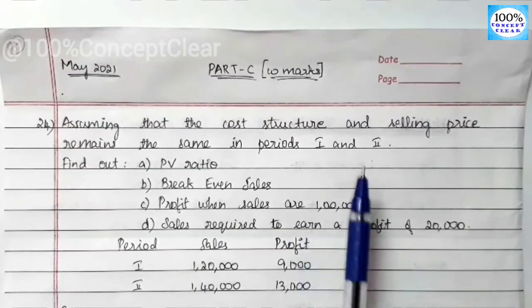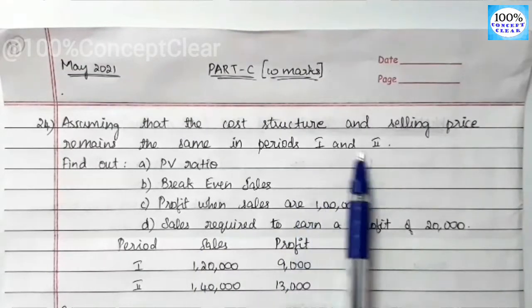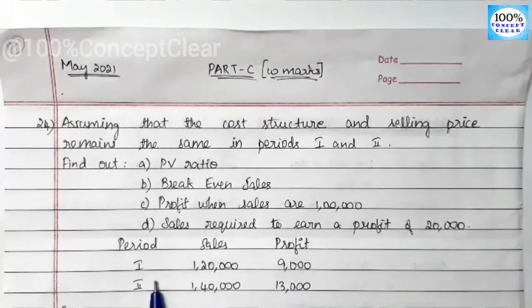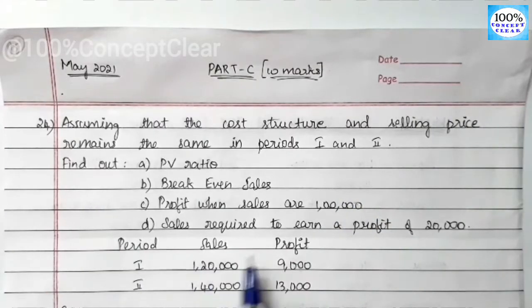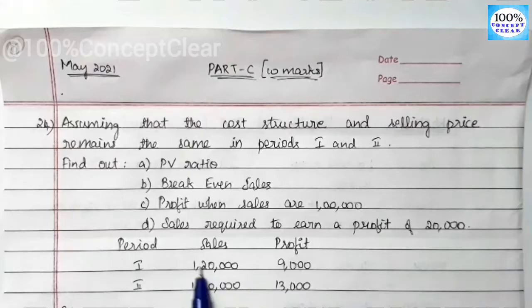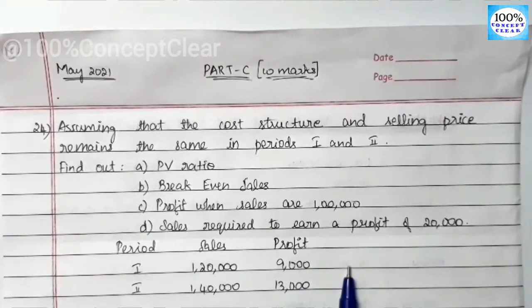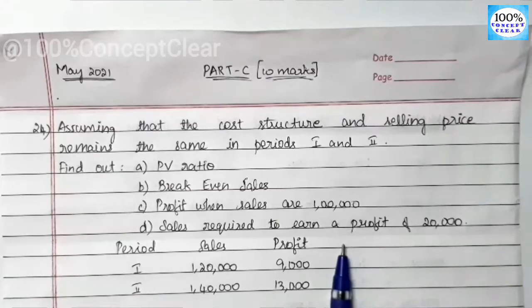We are going to get two periods of information — Period 1 and Period 2 — with sales and profit figures for each period. This sum is from the Marginal Costing chapter.